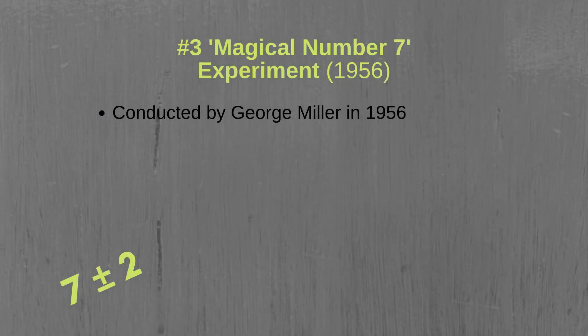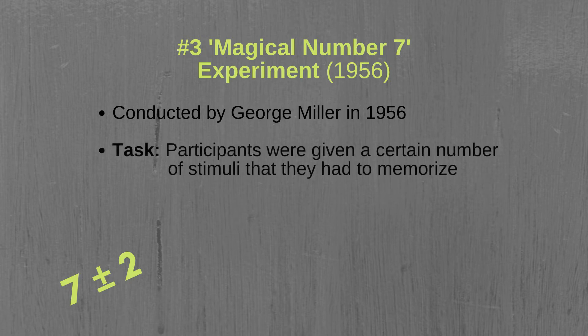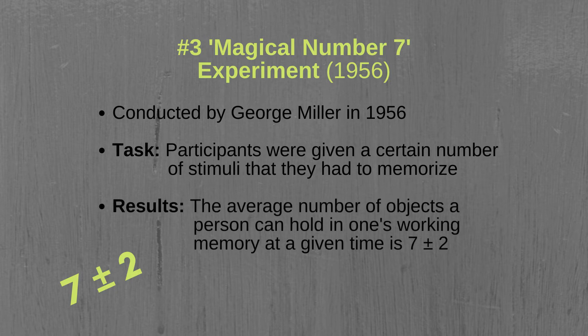The third experiment that we will cover is one that was conducted by George Miller in 1956. In this experiment, dubbed the Magical Number 7 experiment, participants were given a certain number of stimuli that they had to memorize. Miller found that the average number of objects a person can hold in their memory at a given time is around 7 plus or minus 2. This finding, known as Miller's Law, describes how our memory capacity is limited to memorizing 5 to 9 objects such as words, numbers, or concepts. This explains why large amounts of information are more easily memorized when divided into smaller units, a process referred to as chunking.